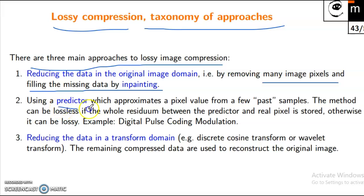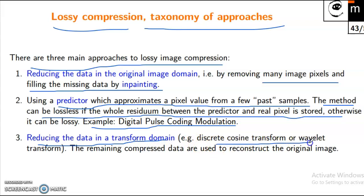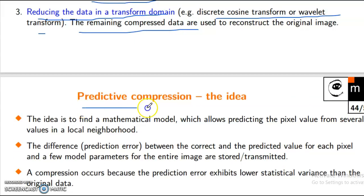Using a predictor which approximates a pixel value from a few past samples, the method can be lossless if the whole residue between the prediction and the real pixel is stored; otherwise it can be lossy. Example: Digital Pulse Coding Modulation, reducing the data in transform domain — discrete cosine transform or wavelet transform. The remaining compressed data are used to reconstruct the original image.